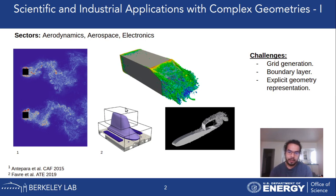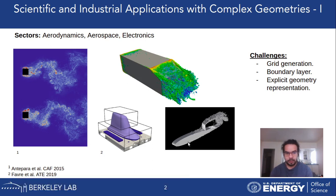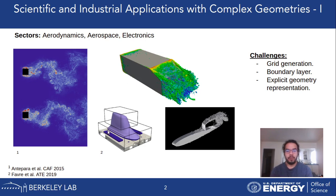Most of the challenges illustrated here point to grid generation as a significant problem — it's not easy to generate these kinds of geometries. Most of the time I used a commercial code to generate profiles with triangles or unstructured grids. Another challenge is that the numerical method must correctly resolve the boundary layer. Additionally, these problems involve explicit geometry representation, where geometries are taken from a CAD file or commercial code and then implemented inside the numerical code.